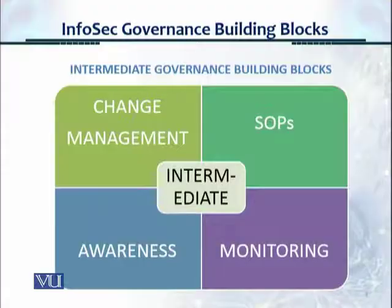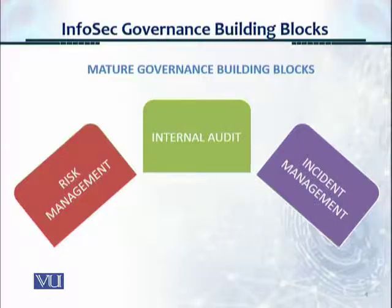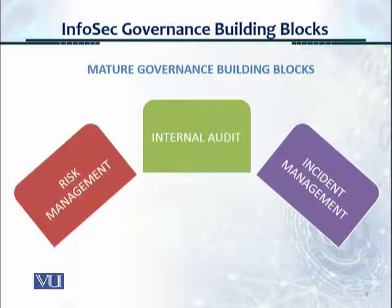The mature or final governance building blocks — the third phase — is that we need to have these three fundamental core governance activities well in place and well embedded in the organization. There's risk management, and all activities need to be looked at, evaluated, and processed from a risk lens or a risk perspective and from a risk lifecycle perspective.